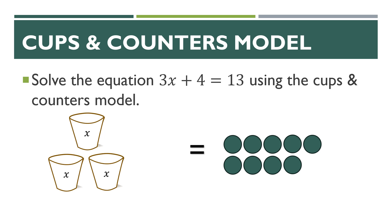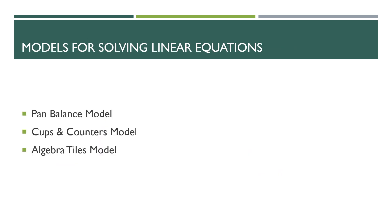Now we have three cups, so we want to rearrange our counters on the right-hand side so that they are in rows or columns of three.